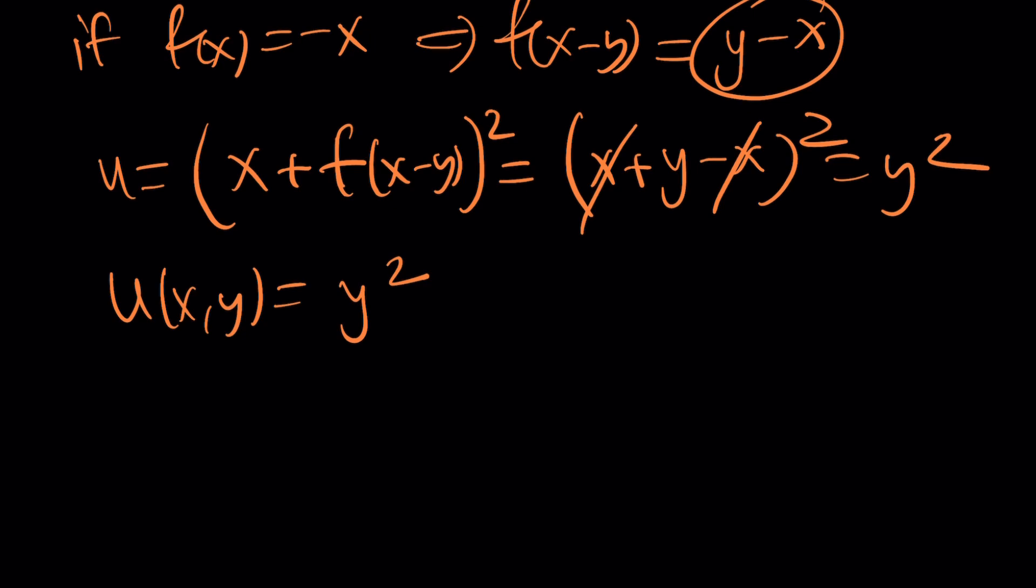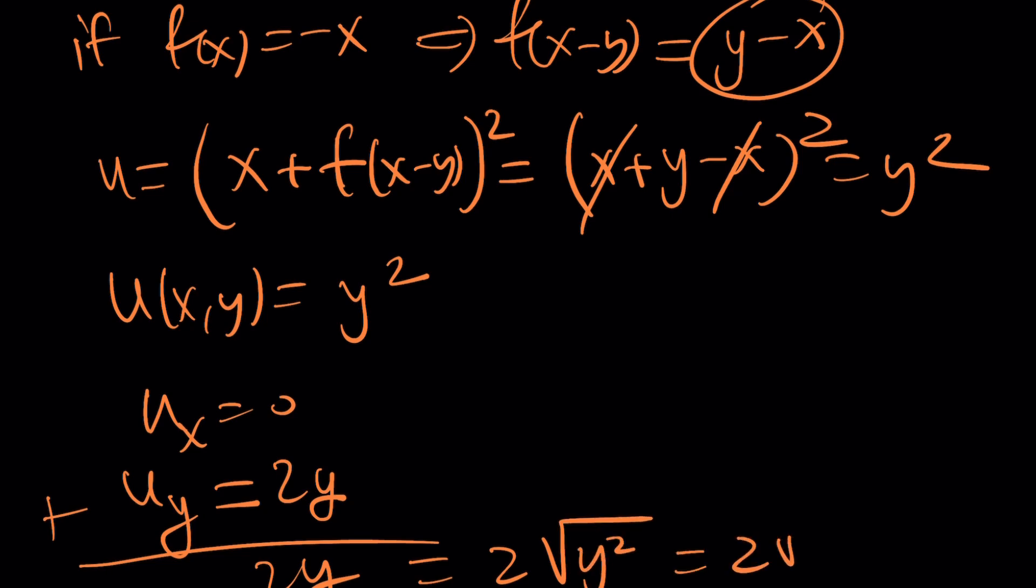And guess what? You can differentiate this with respect to x, which is going to be zero. And you can differentiate with respect to y. It's going to be 2y. And if you add them, you're going to get 2y, which is 2 times the square root of y squared, which is 2 root u. Of course, y has to be positive in this case. There are some conditions which I didn't bother to check, but as you can see here, this solution works.